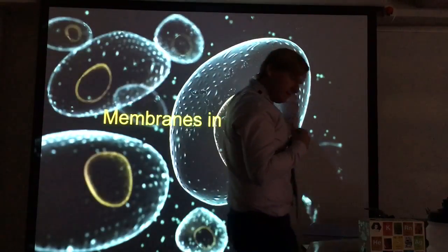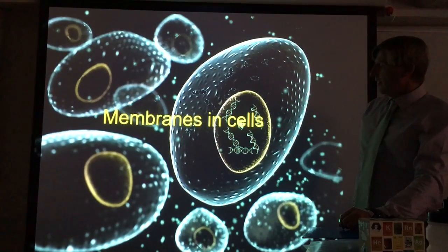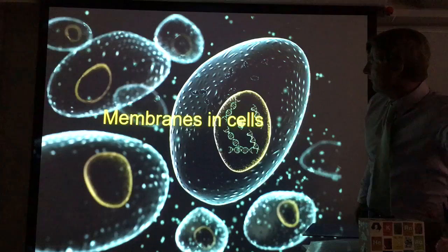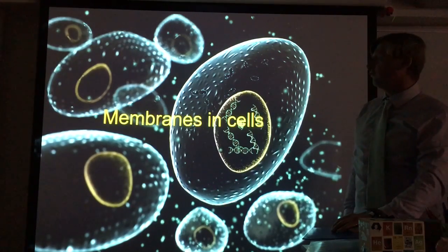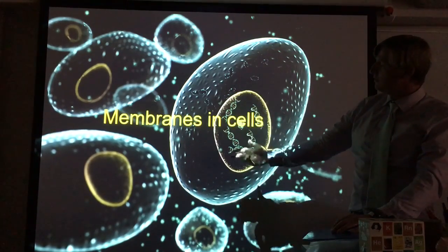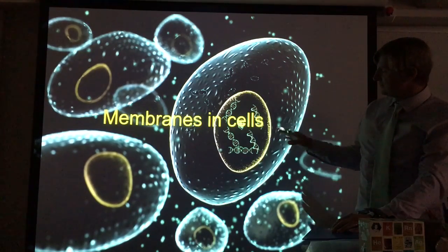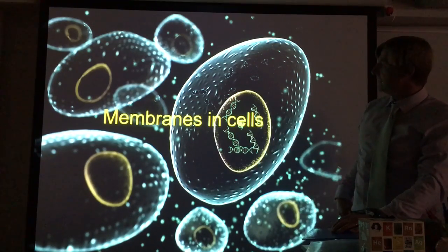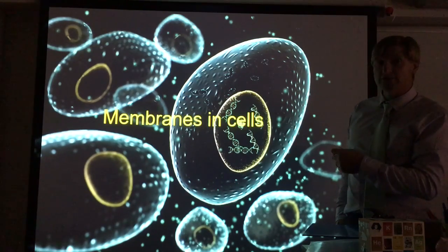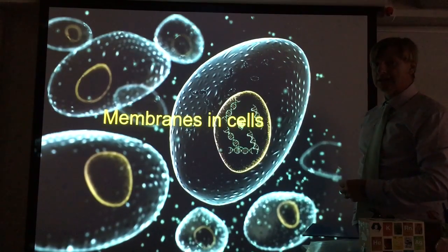Welcome to a video cast on membranes in cells. The first thing I want to say is how beautiful these cells are. It's easy to think of cells as a two-dimensional image from a book, whereas look at the clearly three-dimensional, elegant beauty of them. You can see the nucleus here — this is a bit diagrammatic with the DNA in — but I want us to think about these cells as three-dimensional almost-spheres. With an animal cell, without a cell wall, we have a membrane which allows a degree of flexibility and irregular shape.